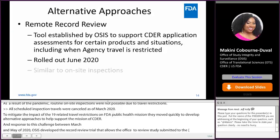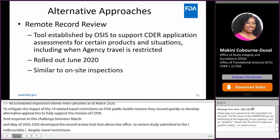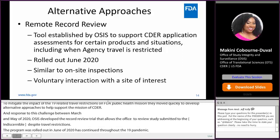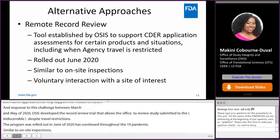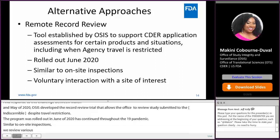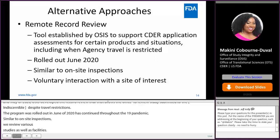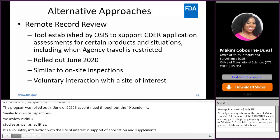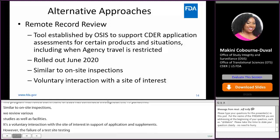Similar to on-site inspections, we review various aspects of studies as well as the facility. It is a voluntary interaction with the site of interest in support of applications and supplements. However, a failure of a testing site to allow OSIS to carry out this assessment may result in our inability to confirm the reliability of study data, and ultimately result in our inability to approve an application relying on that study data.